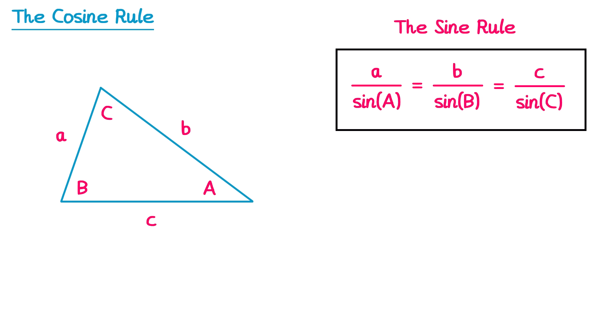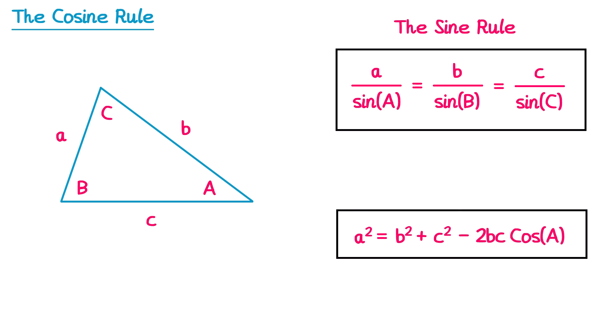There's another rule that applies to this triangle as well. It's a squared equals b squared plus c squared minus 2bc multiplied by cos of A, and this one here is known as the cosine rule, and we're going to use the cosine rule for this video.